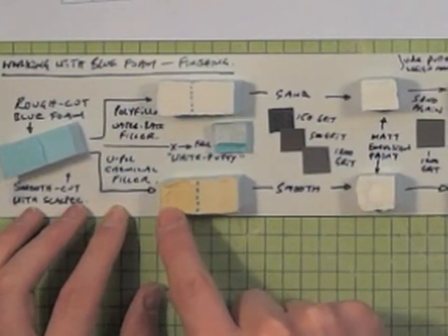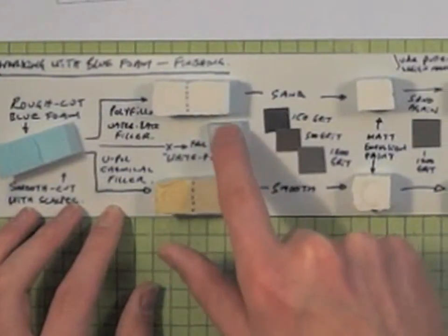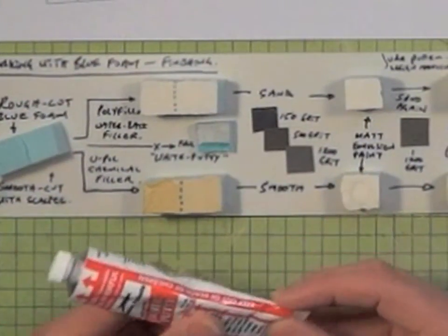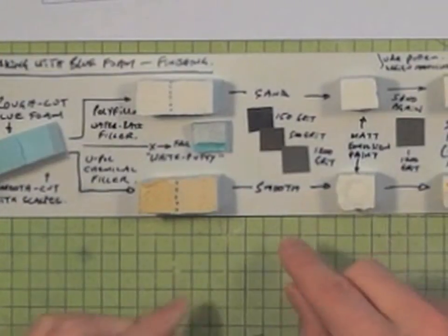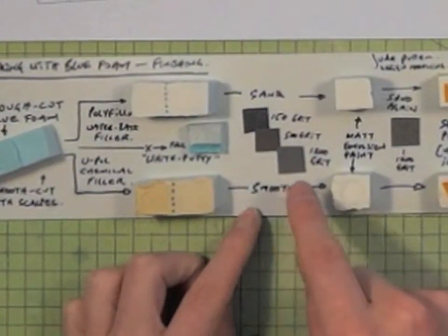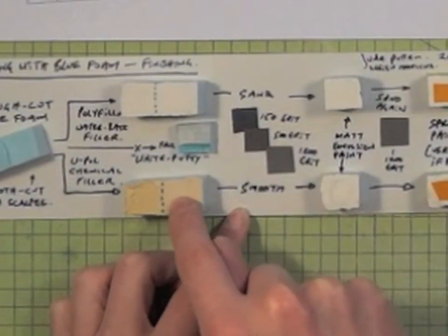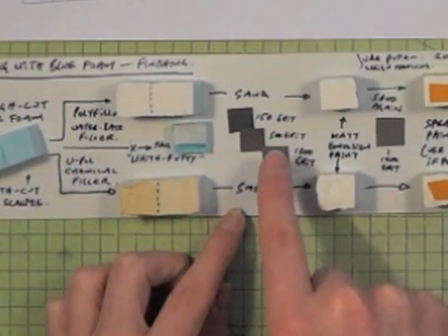Similarly, with the chemical filler. And also, I've also used white putty in the past, which is this stuff. I find it a little bit too solvent-y, a little bit too aggressive, personally. So, I tend to use either of these two. And again, this has got a layer of the chemical filler underneath it.